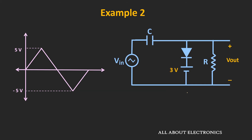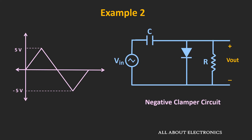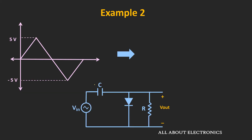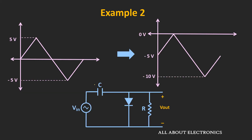If you look at this circuit, then without this biasing voltage, it is the negative clamper circuit. We know that this negative clamper circuit will shift the entire waveform towards the negative side. Here, it will shift the entire waveform by the maximum value observed during the positive half cycle. So here, it will shift the entire waveform downwards by 5V. If you see the output waveform, then it will look like this.